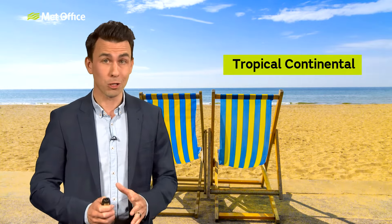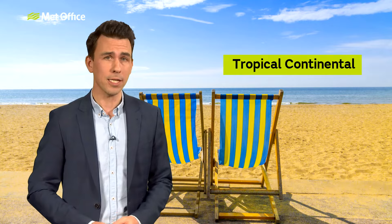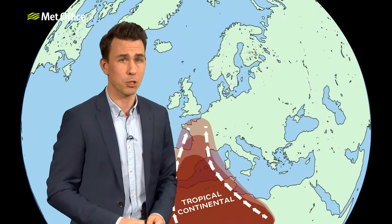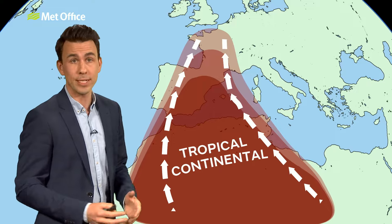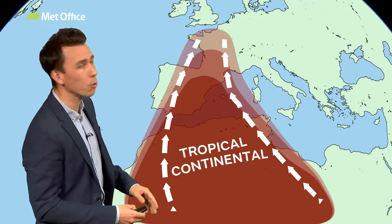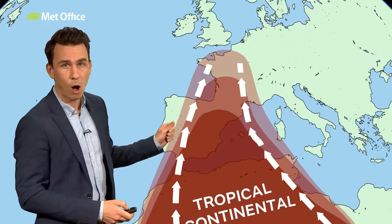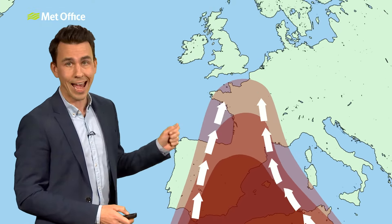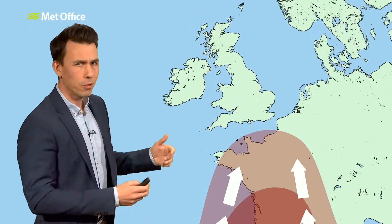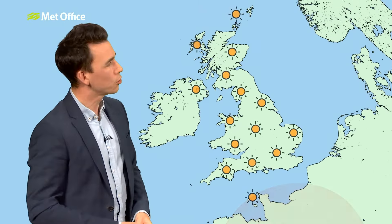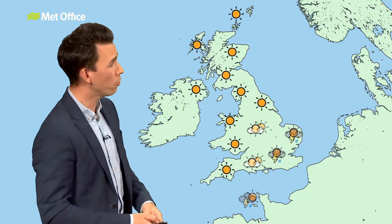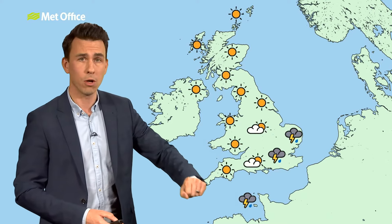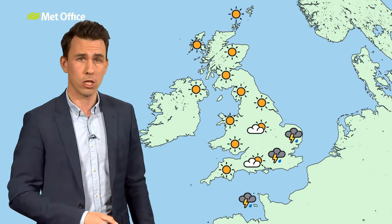Tropical continental. The UK's hottest weather, especially in the summer, is often down to a tropical continental air mass. Southerly winds import heat from southern Europe or North Africa. The weather will be hot, sunny and mainly dry, although the heat can trigger thunderstorms, especially over Europe, but possibly also homegrown over the UK.